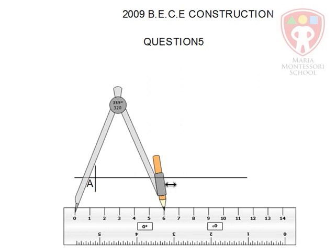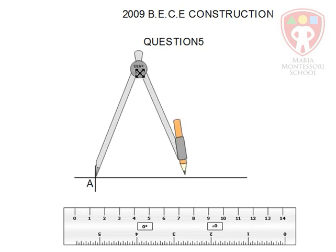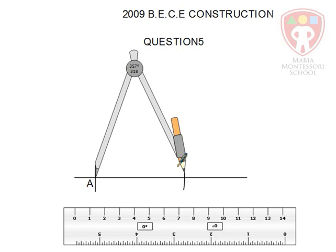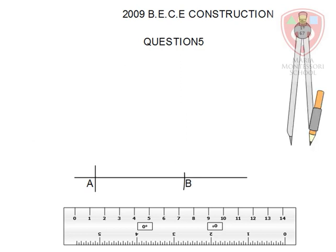Place it at A and draw an arc through the horizontal line, and label the point of intersection as B. The distance between them is six centimeters.